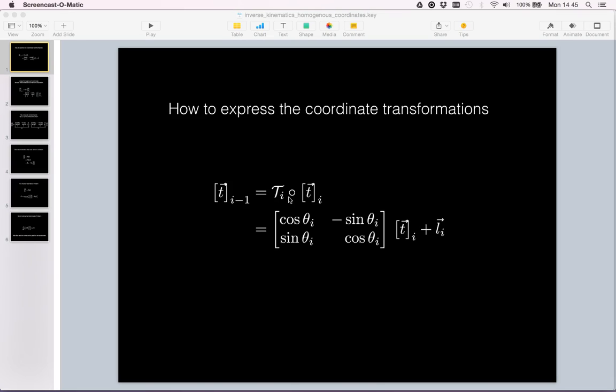The transformation Ti consisted of a rotation and translation, which we can write up like shown here. Given the tooltip vector in the i-th link frame, we will rotate it by the angle theta i. Once we have obtained the rotated version, we are going to add the translation li to the rotation.